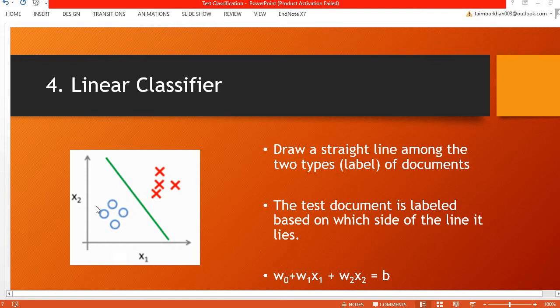If it falls on this part of the line, it's decided as belonging to the circle class, otherwise it's decided as belonging to the cross class.